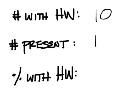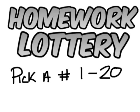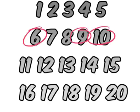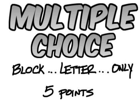10 out of 18 for homework and that is 56 percent. Alright, if you have credit for your homework, pick a number from 1 to 20. The winning numbers are 6, 9, 10, 15, and 16. Multiple choice before we get to the answers.